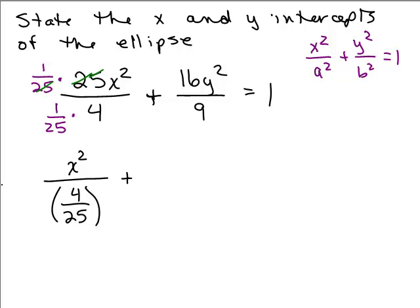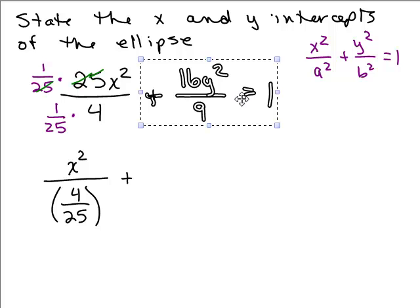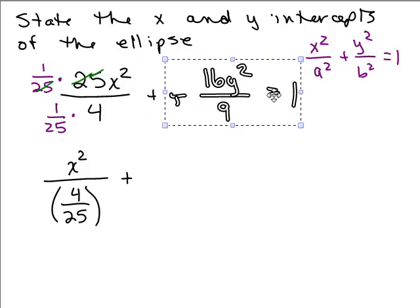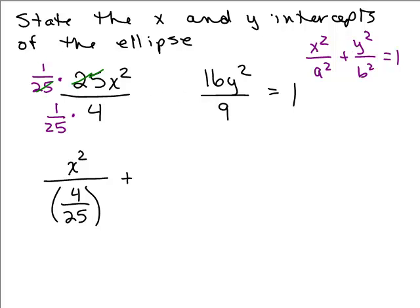Now we can do the same thing for this other one. I'm going to move this over a little bit. Here we go, so we have some space. So what am I going to do to get rid of this 16 in front of the y squared? I'm going to do the same trick. Multiply it by 1 16th and the denominator by 1 16th. So then my numerator will be what I want, just a good old y squared. And what will my denominator be? It'll be 9 16ths.